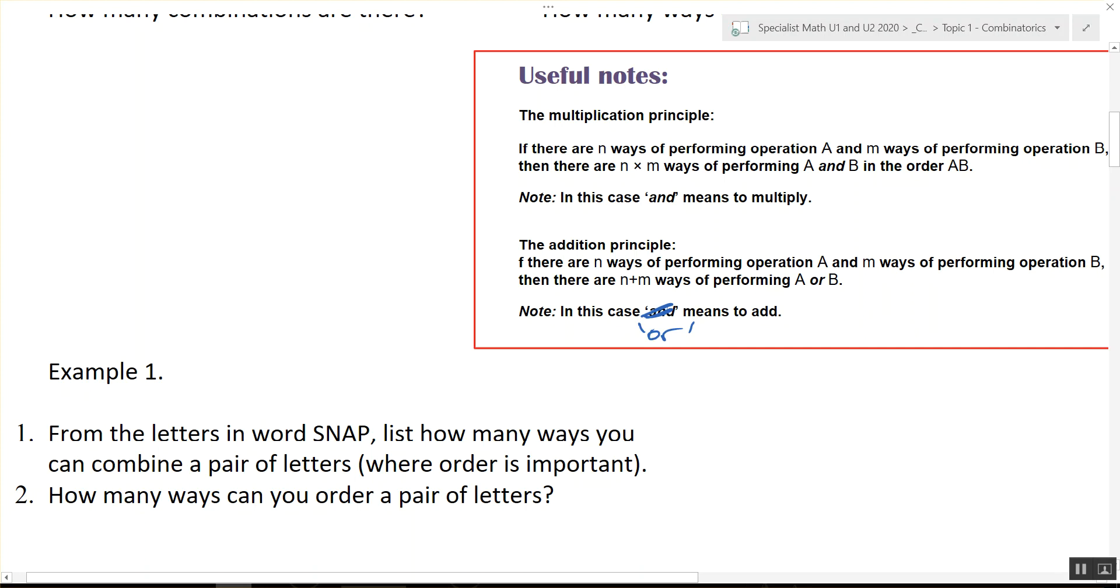So what's one combination of letters? We could have NA, we could have SN, we could have AP, we could have NP, we could have NS, etc. Order is important, so NS is different to SN.